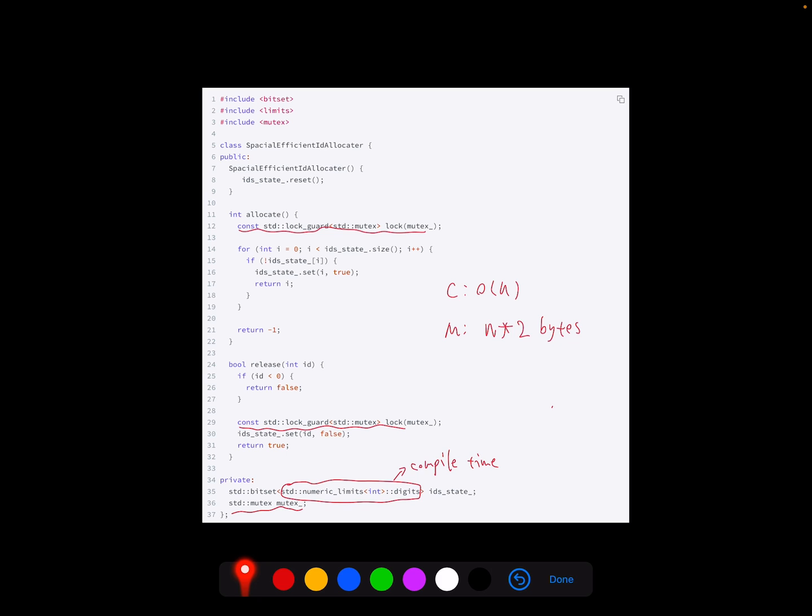If you remember, the previous one is N multiply 4 bytes multiply 2. So here, we only use one container, so this will be only multiply 1. So in turn, the memory cost for this method, we only have 2N bytes. Computation, of course, is getting worse because we need to iterate all the elements in worst case. Then for allocate it will be big O of N, and release is still big O of 1.